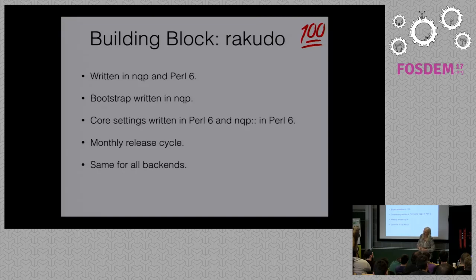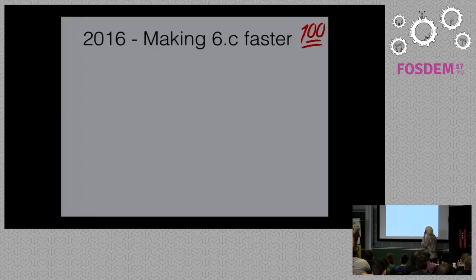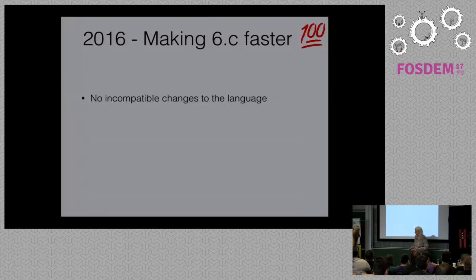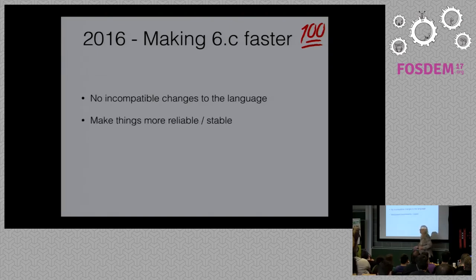There used to be a lot more of that, and it used to be way worse when we also had Parrot as a backend — most of that is gone now. So, what did we do in 2016? We really worked on making 6.C — the version of Perl 6 released at Christmas, hence the C — faster, without any incompatible changes to the language, and also making it more reliable and more stable.